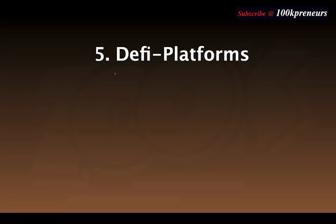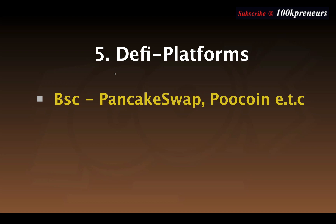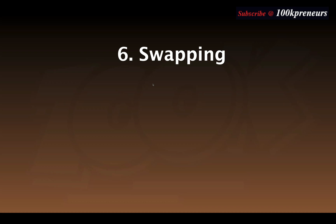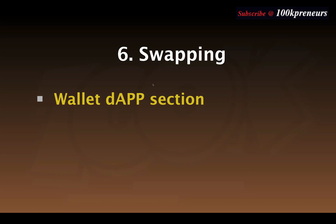Now that you have the contract address, the next question is: on which platform can I swap this token? For Binance Smart Chain tokens you have PancakeSwap, PoolCoin, and many others. For Ethereum tokens you have Uniswap, SushiSwap, and many others. Because we are making an example with IFI token — which is based on Binance Smart Chain — I'm going to show you how to buy IFI token using PancakeSwap and PoolCoin.